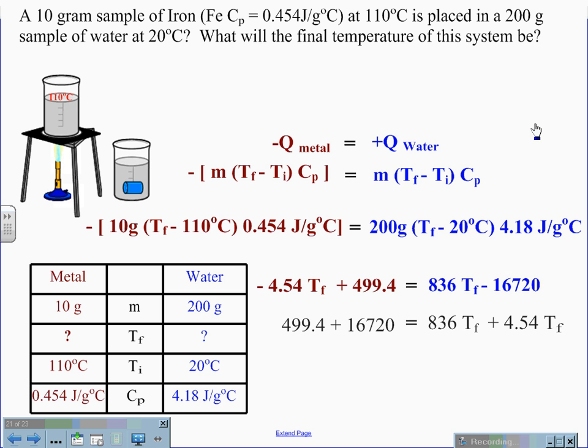Combining like terms, 499.4 plus 16,720 equals 836 TF plus 4.54 TF. This gives us values of 17,219.4 equals 840.54 TF.